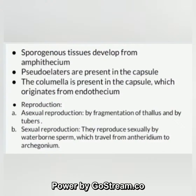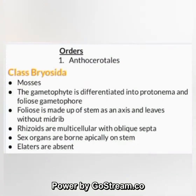Orders of Anthocerotopsida include Anthocerotales. Class Bryopsida — mosses: the gametophyte is differentiated into protonema and foliose gametophore. The foliose gametophore is made up of a stem as an axis and leaves without midrib.